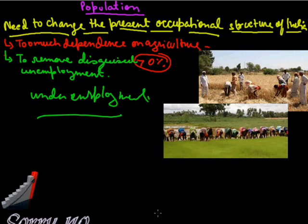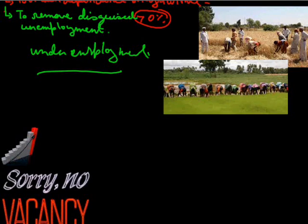We have to come out from this situation because this unemployment is a curse on agriculture and it is facing a lot of problems because of it. To remove this, there is a need to change the present occupational structure of India.